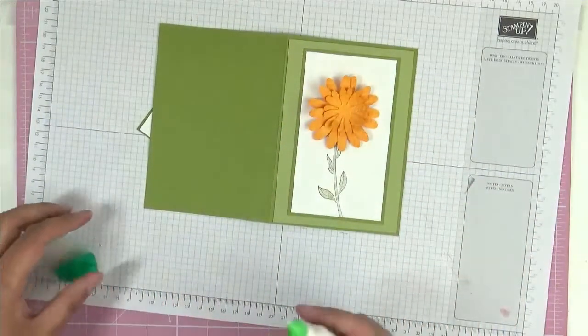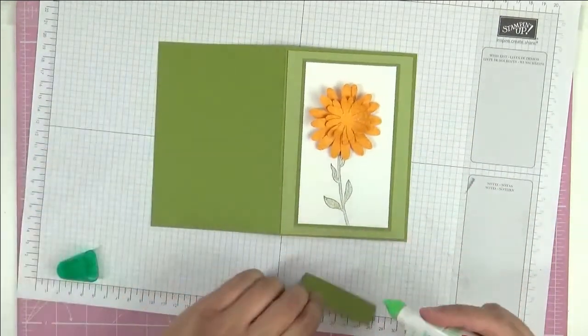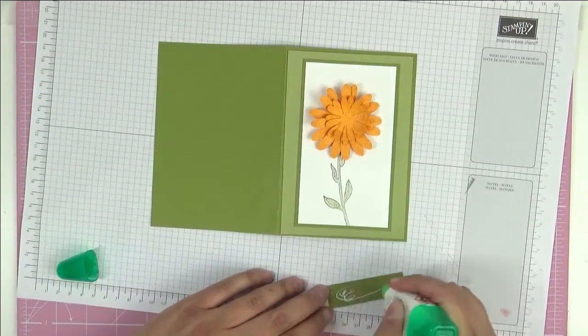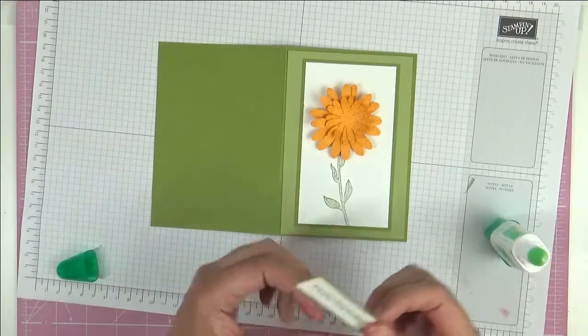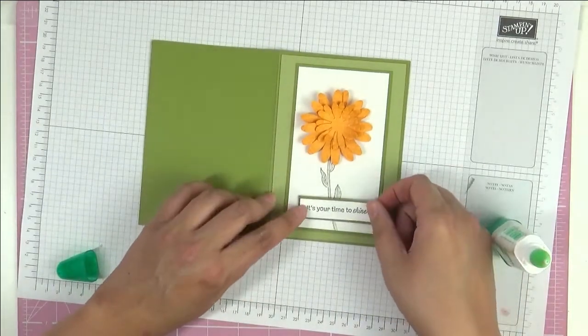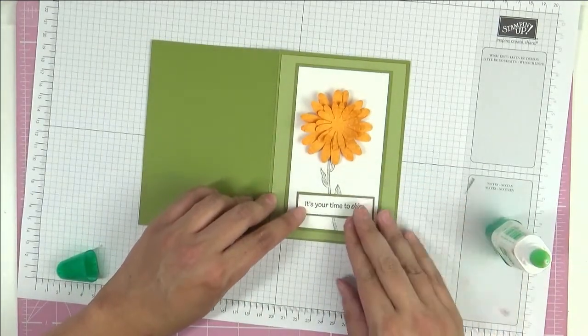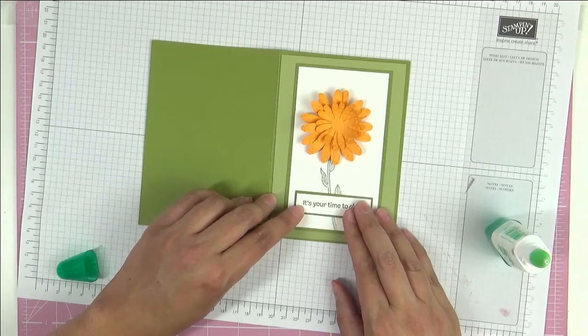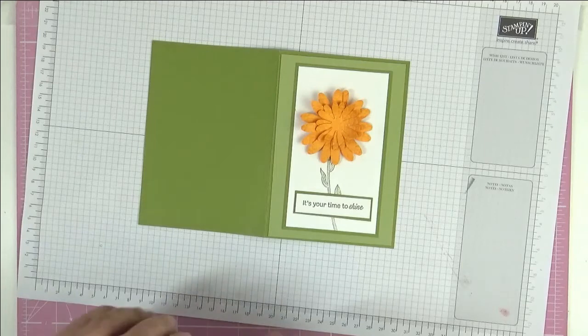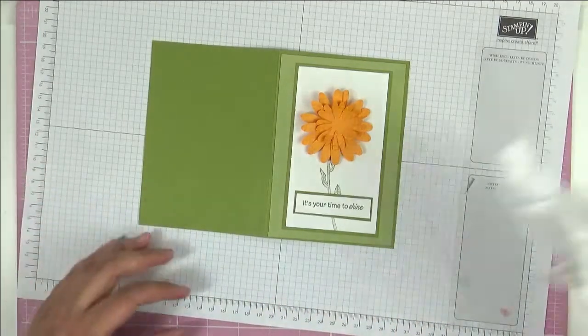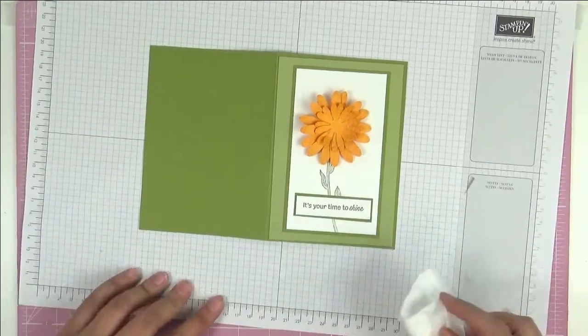I'm just going to put some Tombow, goodly amounts on the back there, and then it goes down like that. And then I'm saying... I've just got Tombow all over my craft mat, but hey ho. Let's see if I've got a tissue here - I can wipe off the worst of it.